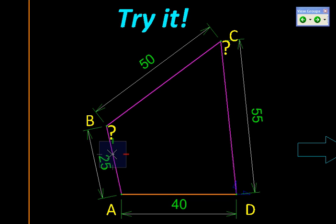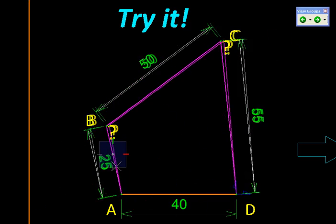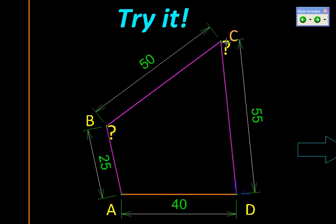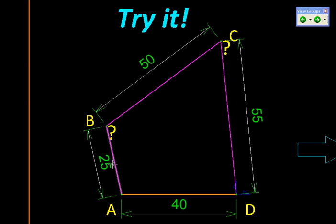For example, in this case we can give input to link AB which is capable of complete rotation, so we would call it a crank. Then the output link CD oscillates, giving us a rocker. So here we have a crank-rocker mechanism by fixing link AD.